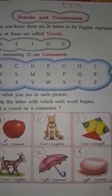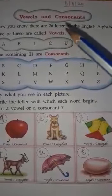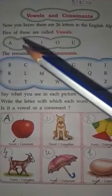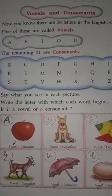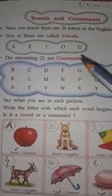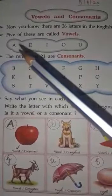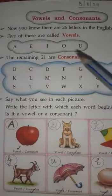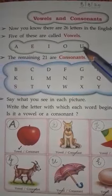Students, how many letters are in the English alphabet? There are 26 letters. Out of these, 5 letters are called vowels: A, E, I, O, U. These 5 letters are vowels.